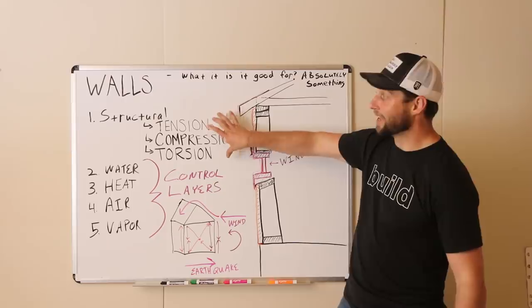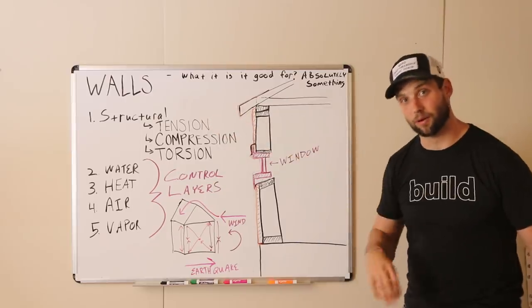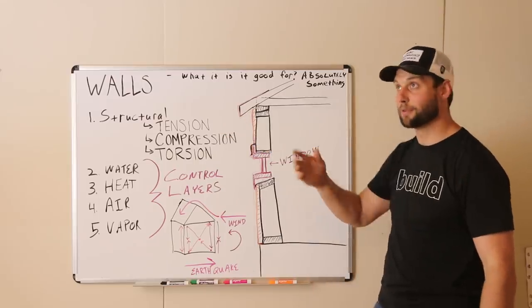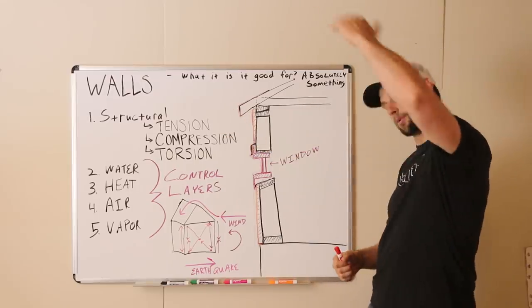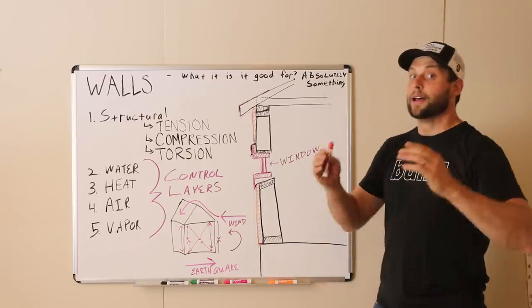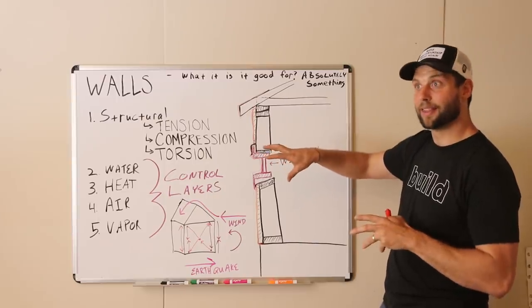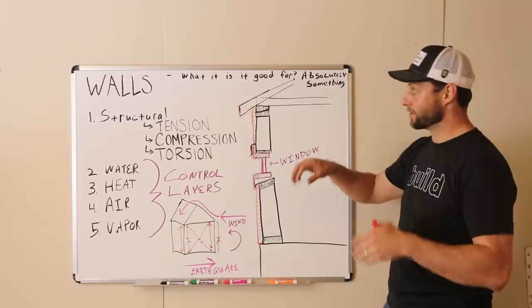Alright, so first thing that a wall is supposed to do on your home is to keep up the roof, right? So it's a structural component and everybody says well that's obvious we have a wall to keep up the roof to keep the rain off of our heads. That's true, but the loading mechanisms are a lot different than what most people assume.